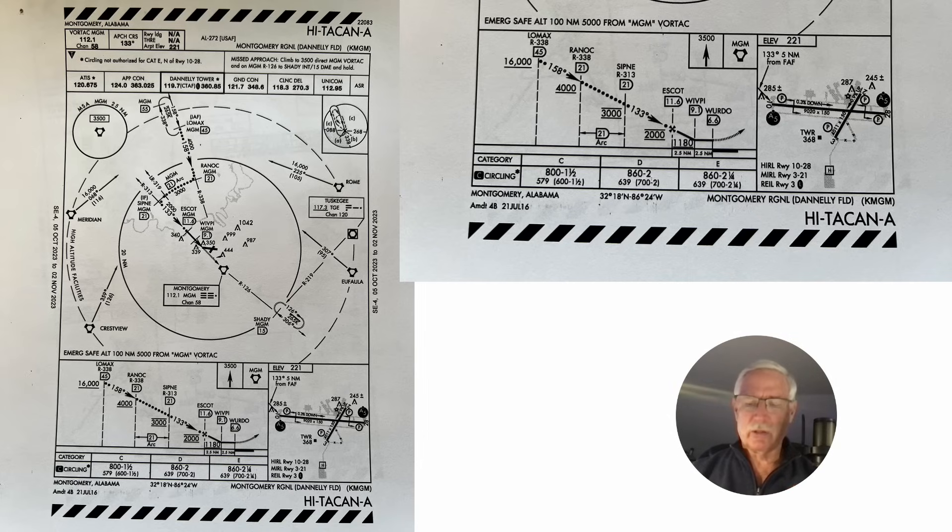Now if you look at this approach plate here, on the category E the approach minimums are 860 feet which puts you 639 feet above the ground. Normally you're at a 1500 foot pattern altitude and if you're doing the circling approach at the circling minimums it's a whole different ballgame.